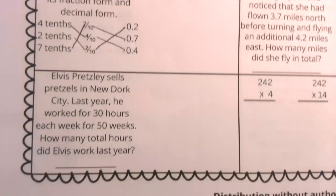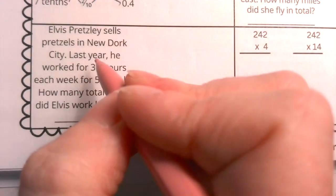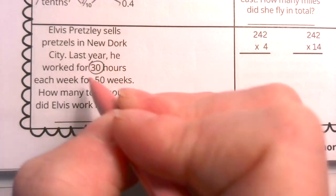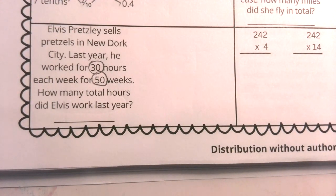Now, let's take a look at Elvis Presley. He sells pretzels in New York City. What a fun city. Last year, he worked 30 hours each week for 50 weeks. I'm going to circle that because I know those numbers are going to be important. Now, the last question really tells us our task. How many total hours did Elvis work last year?